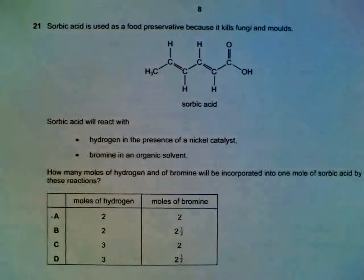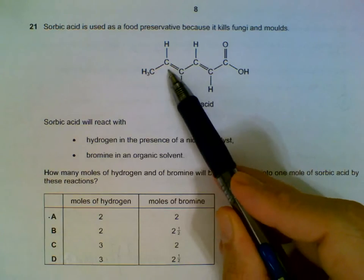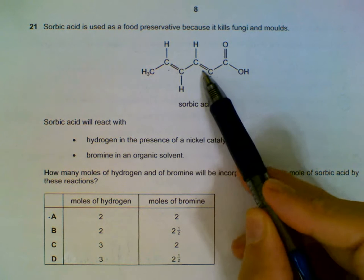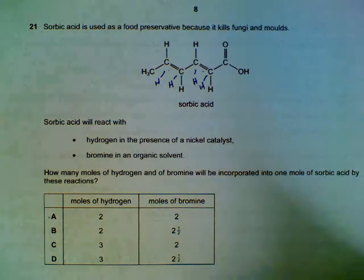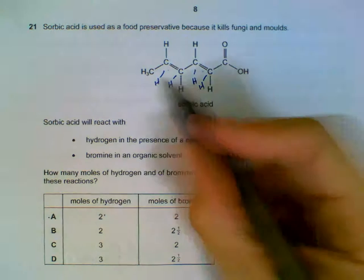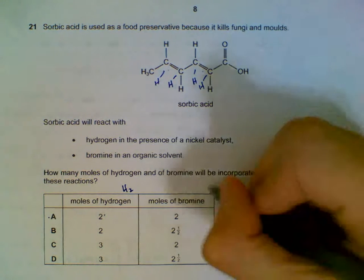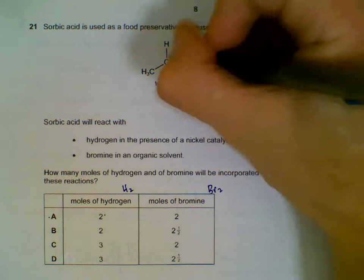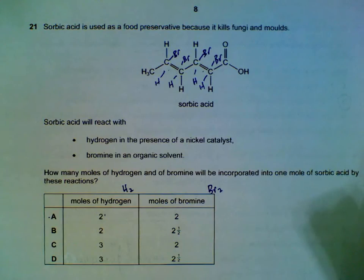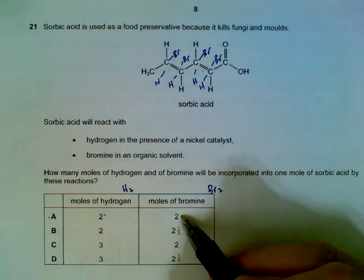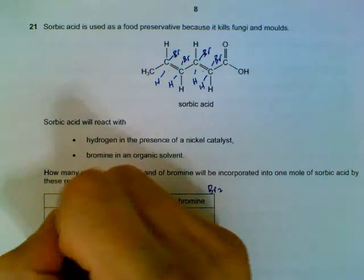How many moles of hydrogen and bromine will be incorporated? Hydrogen will be added to this double bond, hydrogen will also be added to this double bond, so H-H-H-H-H-H. We have two moles, four hydrogen atoms, which comes from two moles of H2. So bromine is the same as hydrogen - they can be attached here: one bromine, two bromine, three bromine, four bromine. And to have four bromine atoms we will need to have two moles of bromine gas or bromine liquid. So two moles of H2, two moles of Br2.